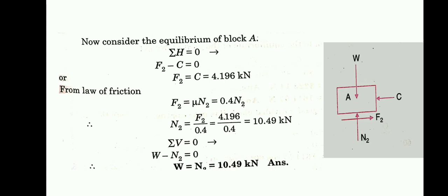Applying the vertical equilibrium equation — sum of vertical forces equal to zero. The vertical forces are W (self-weight) downward and N2 (reaction from horizontal surface) upward. So W minus N2 equals 0, giving W equals N2 equals 10.49 kN. This problem is now complete. This is one important type of problem in friction — that is, two-body contact problems.